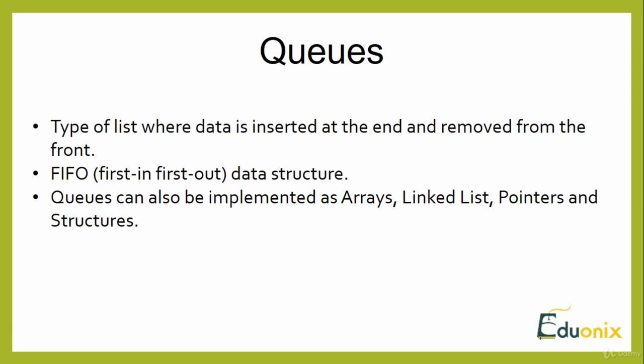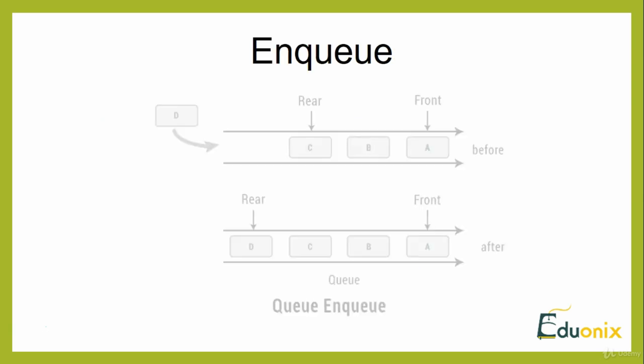Queue includes various types of operations, like stack had push and pop — push for insertion and pop for deletion. In queue, the two primary operations are inserting a new element into the queue and removing a particular element from the queue. The insertion operation is called enqueue and the removal operation is called dequeue. Let's analyze both these operations deeply with a diagram.